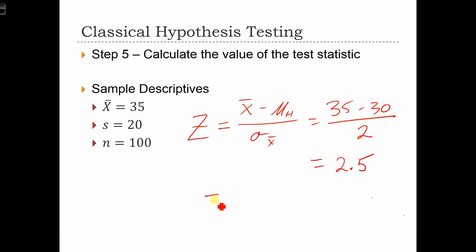So our z sub test to know which z we're talking about is 2.5. In other words, when we standardize that sample mean x bar based on the assumption that the population mean is mu h, we find that the z-score for the sample mean is 2.5. In other words, that z-score is pretty far out in the right tail of the normal curve.